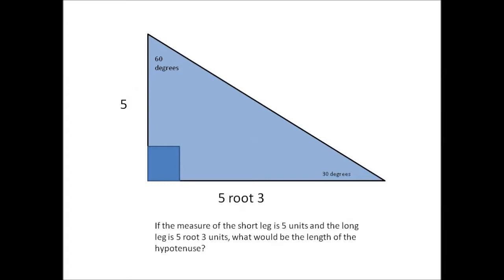If the measure of the short leg is 5 units and the long leg is 5 root 3 units, what would be the length of the hypotenuse? According to the 30-60-90 triangle formula, the hypotenuse is twice the short leg. Since the short leg is 5, the hypotenuse should be 10.